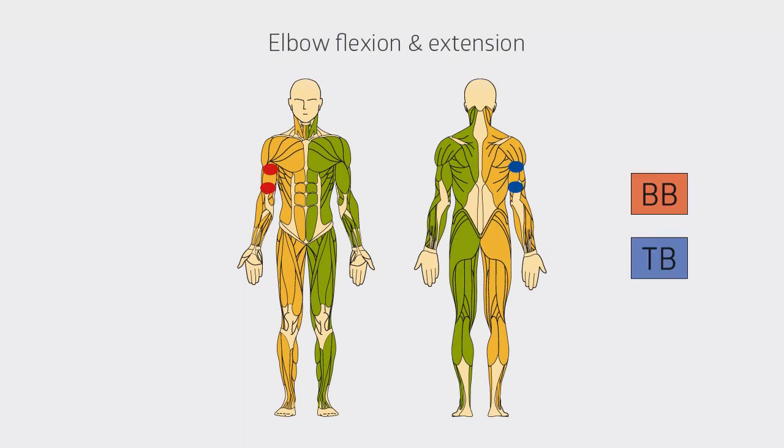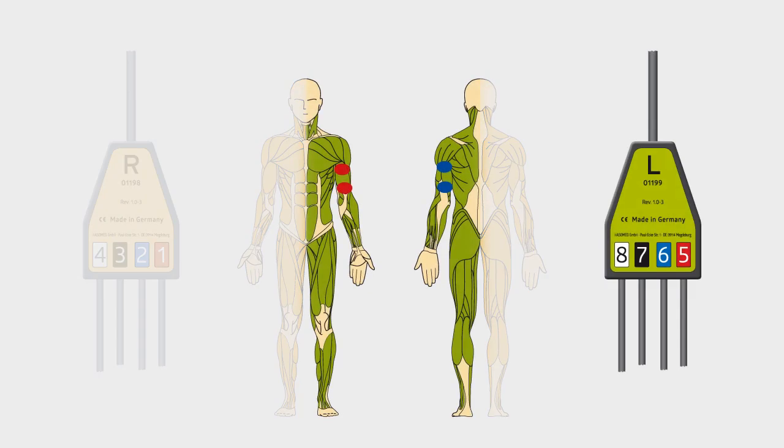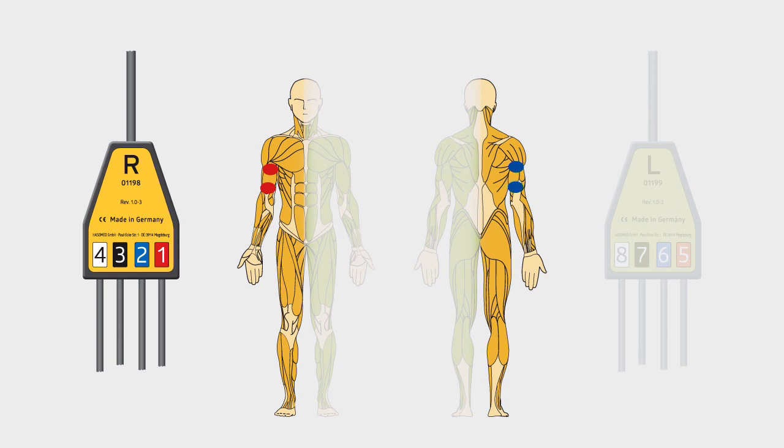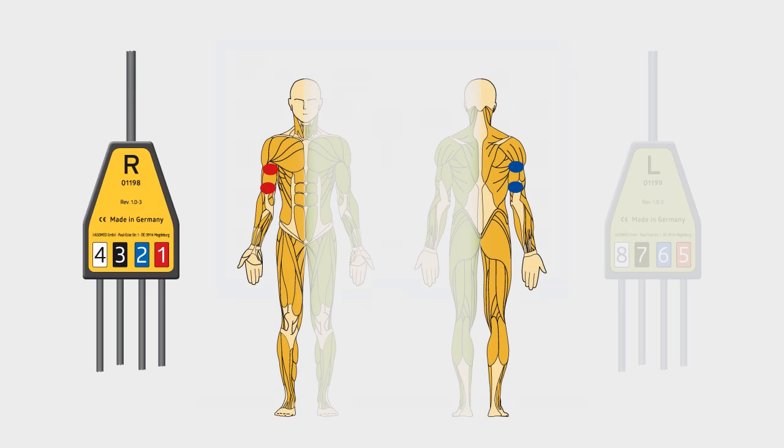The electrode positions are color coded and displayed on the body diagram depending on the template and channel configuration that you choose. The Hasamed cables and electrode connectors themselves are color coded to match. This makes the application and allocation of the electrodes very easy and it saves time.